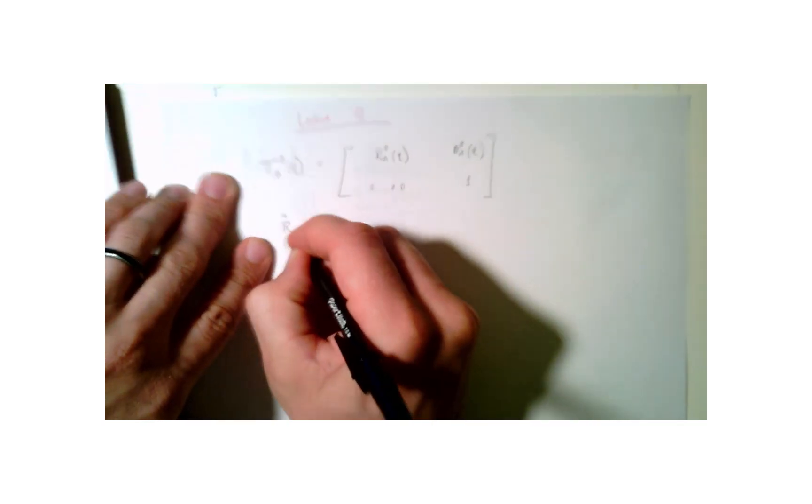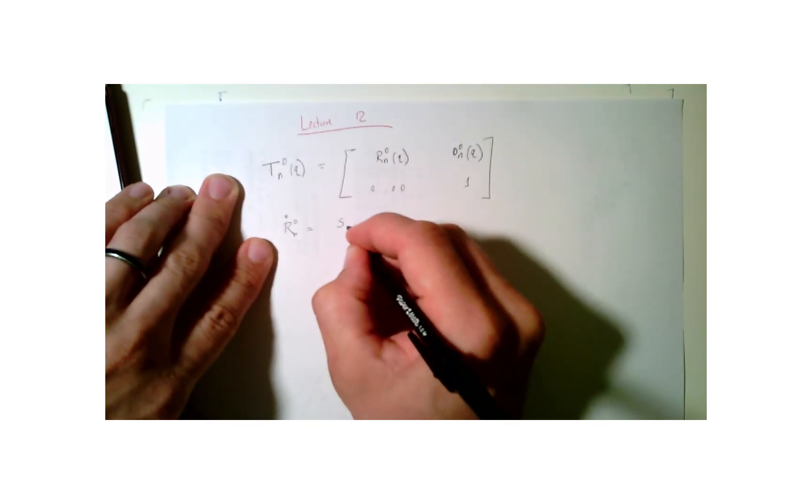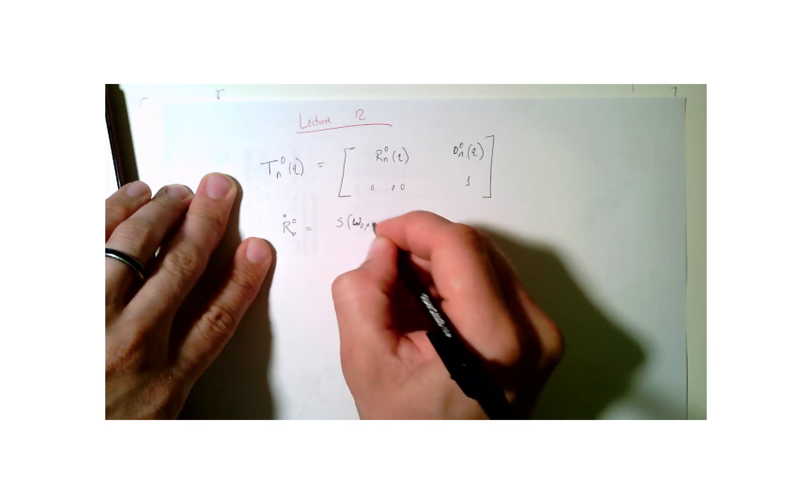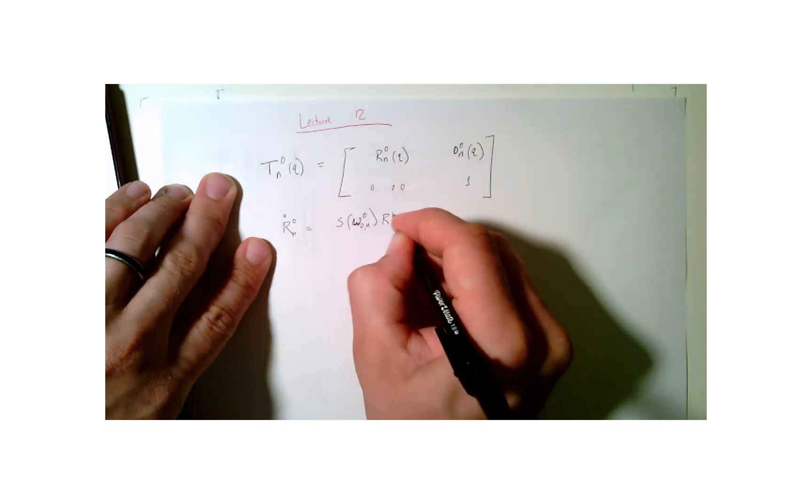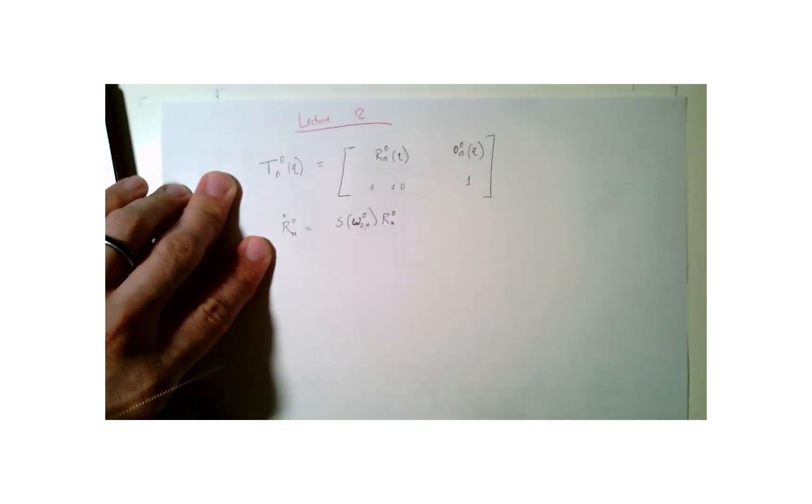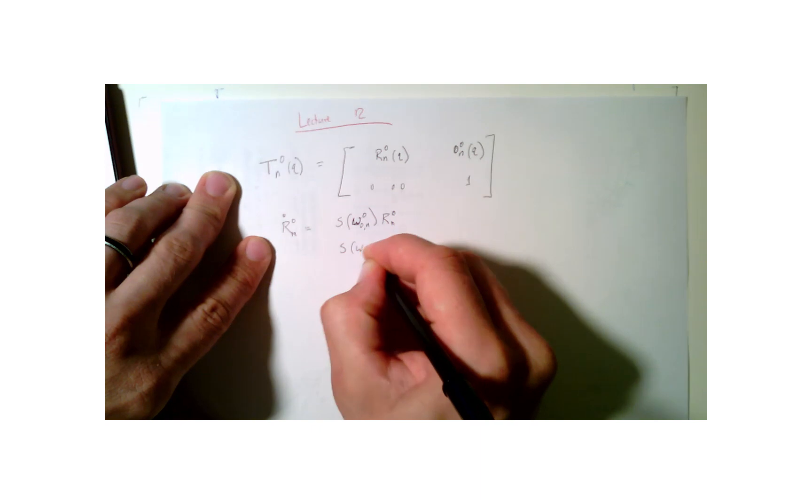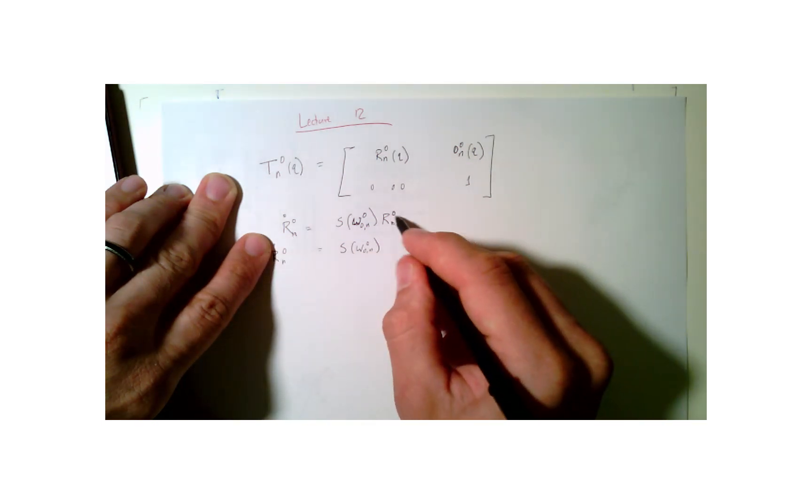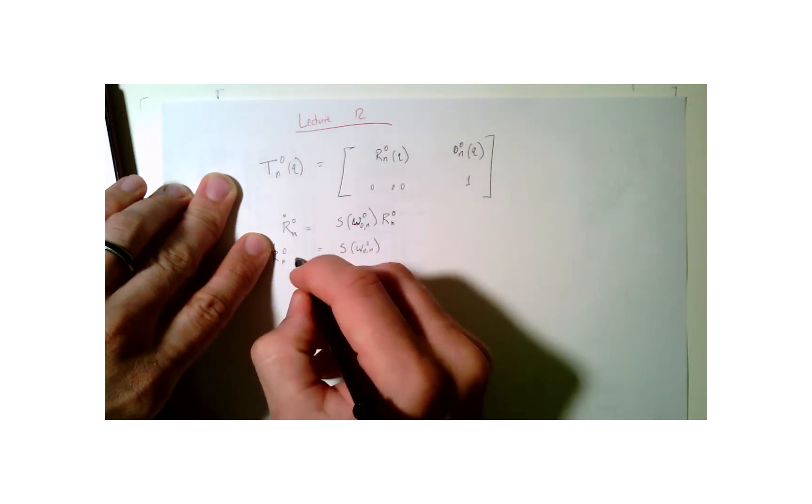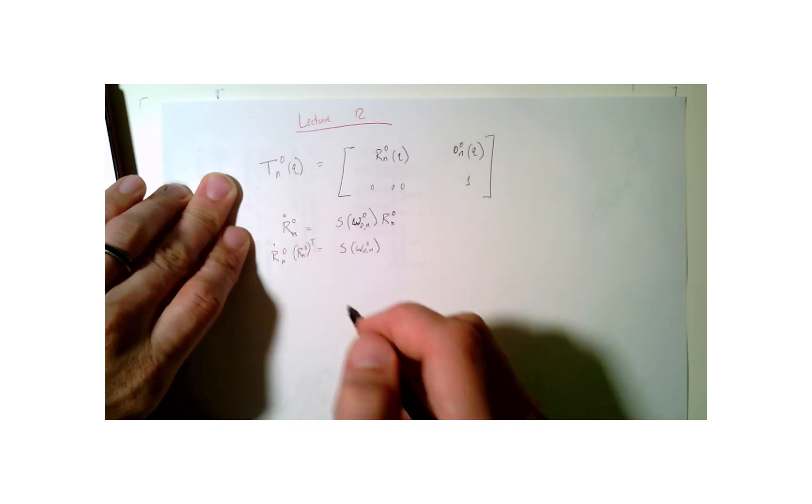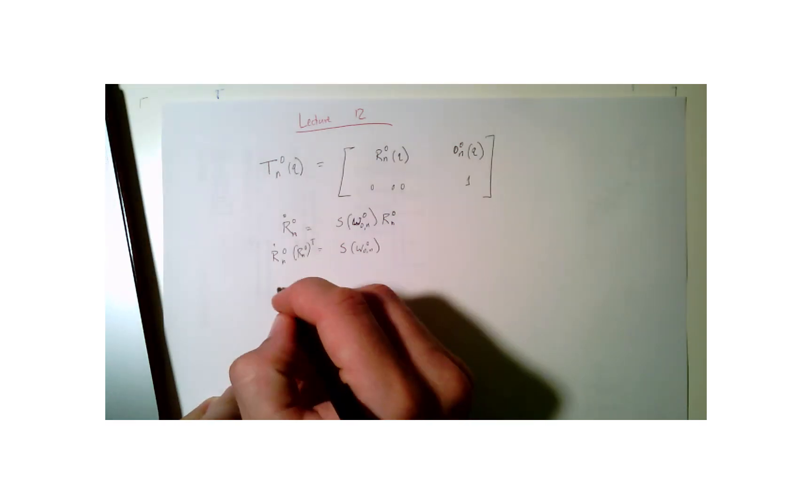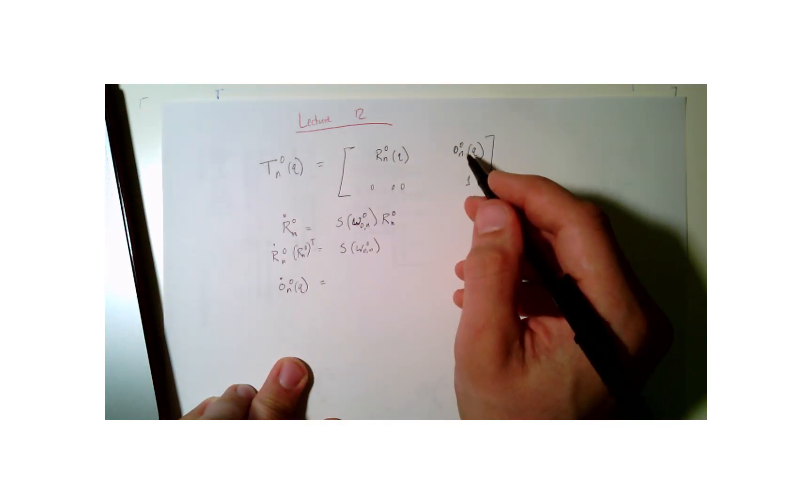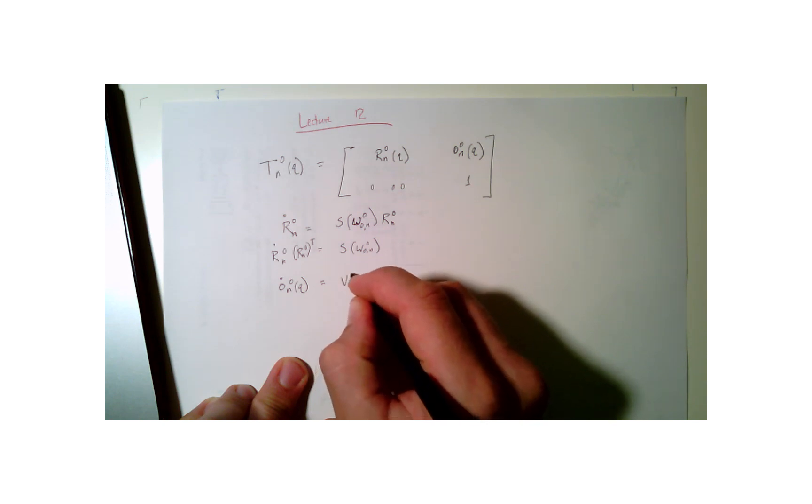Now what happens when we take the time derivative of this? Well, we need to know what is r dot n of 0. Well, that is just some skew symmetric matrix around the angular vector omega from 0 to n, 0, n in frame 0, times the current r n 0. If you wanted to, we can isolate and figure out what s is. s of omega 0 to n 0 is equal to r dot n 0. Then we'd have to multiply on both sides by the transpose of this to cancel it out. So you get r n 0 transpose. You can isolate that by itself. What is the derivative of this o n to the 0? It's a function of q. Well, this is going to be just, what is the velocity of that end vector? That's going to be v n in 0.